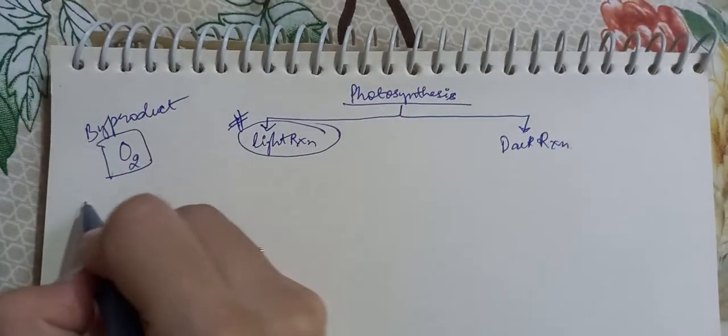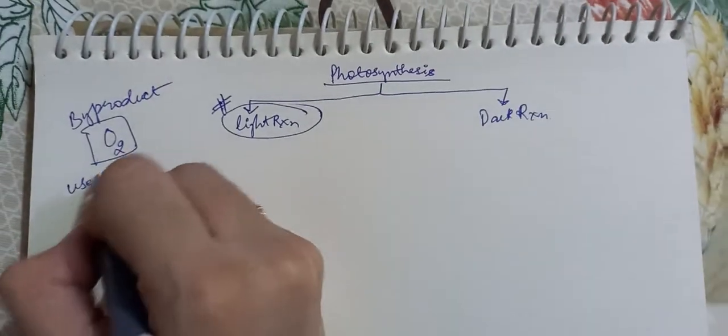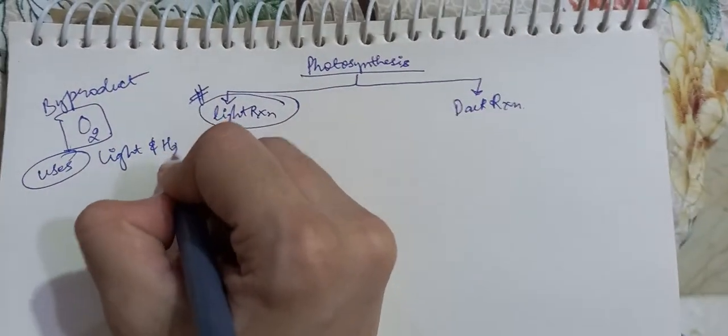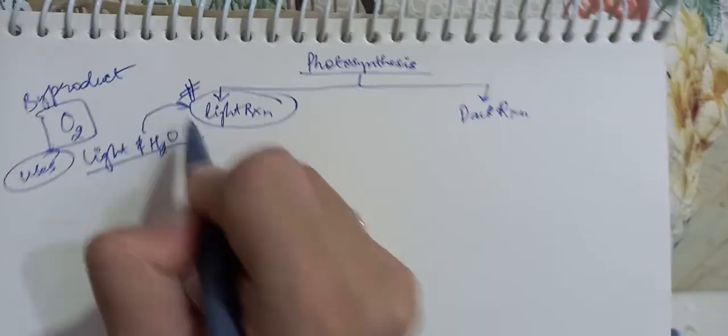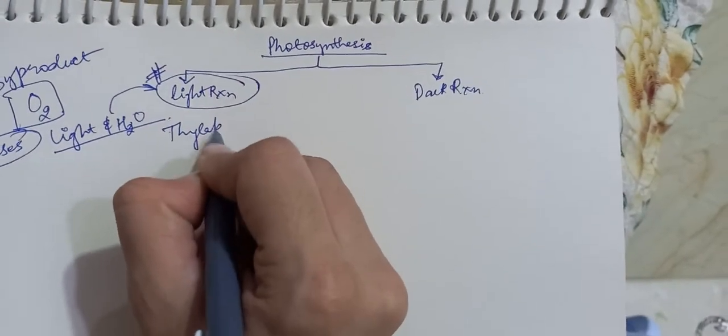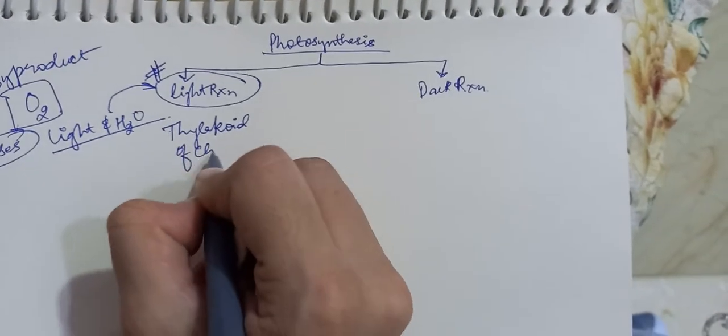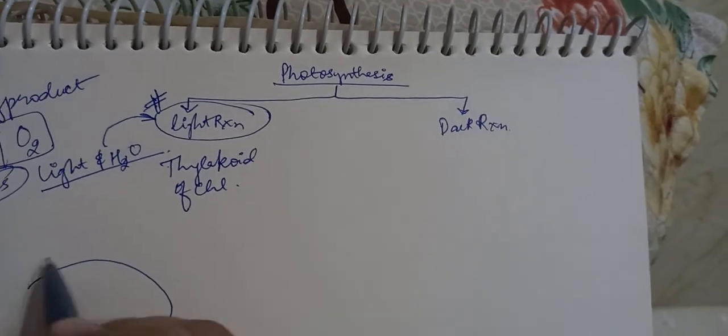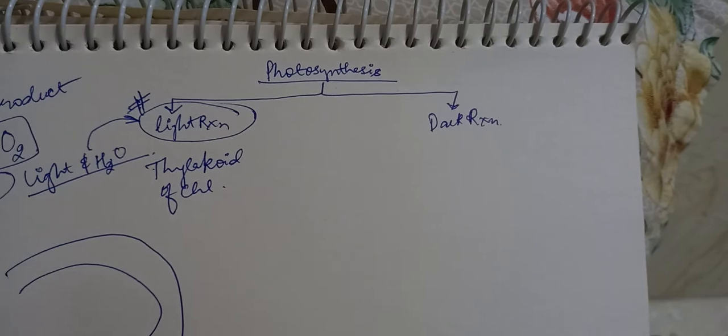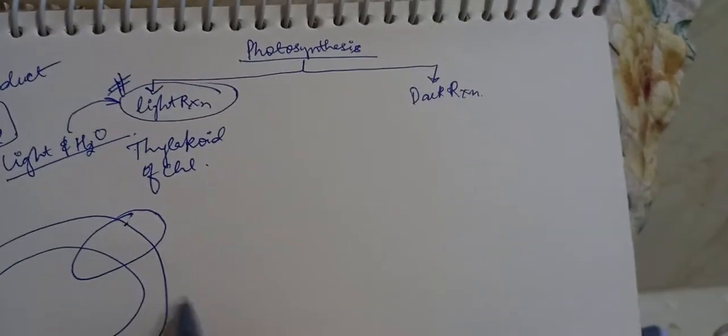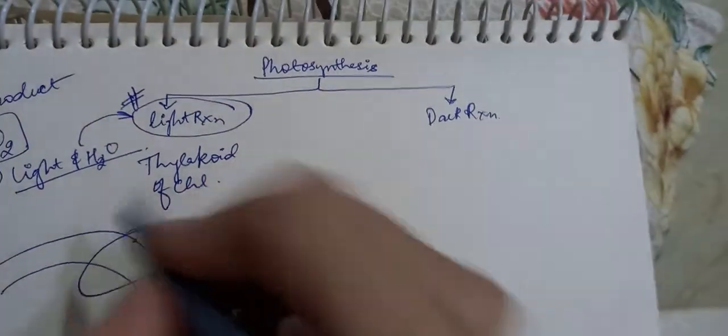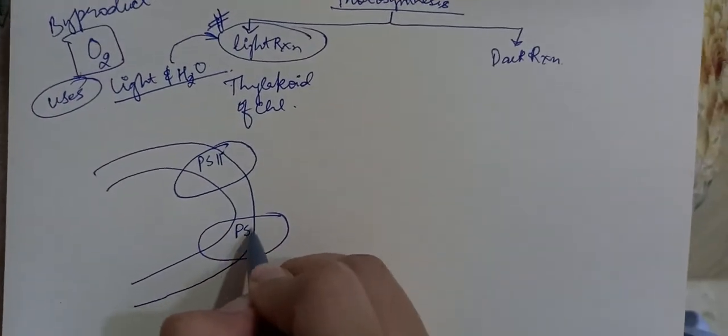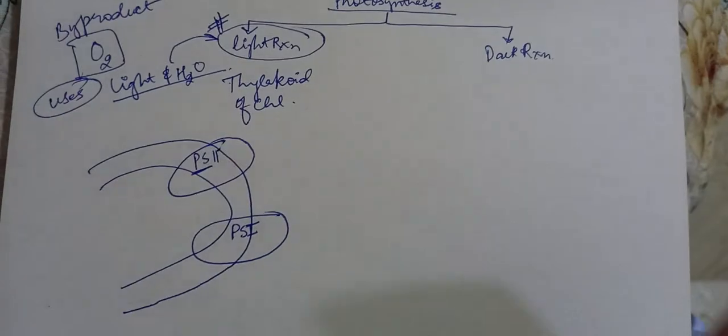It uses light and water for conducting this reaction in the thylakoid of chloroplast. In the thylakoid membrane, there are two protein complexes which are known as PS2 and PS1. PS stands for photosystem.